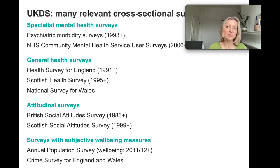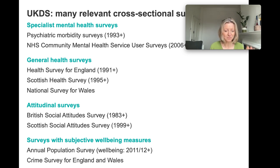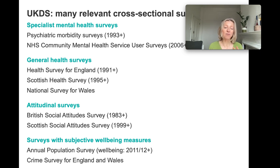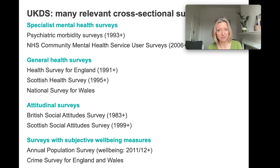Also worth noting that many different surveys now include subjective well-being measures like the Warwick-Edinburgh measure and the ONS-4, which opens up a whole range of different studies if you're interested in more general well-being. Also have a look at something like the Crime Survey, because they ask questions of victims — for example, victims of violence — about how their experiences have affected their mental health.